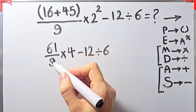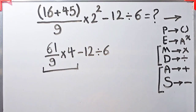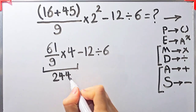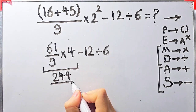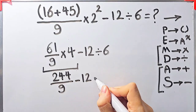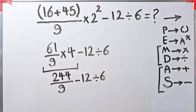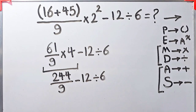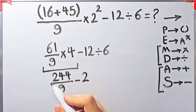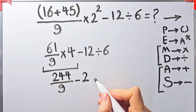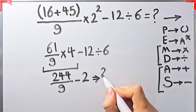Now we have multiplication, subtraction, and division. First we simplify the multiplication: 61 over 9 times 4 equals 244 over 9. Now we have 244 over 9 minus 12 divided by 6. Next we simplify the division: 12 divided by 6 equals 2. So now we have 244 over 9 minus 2.